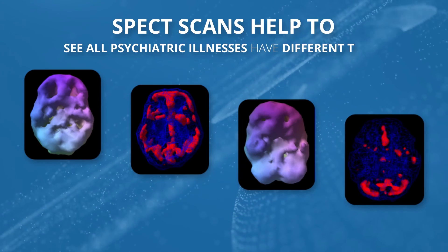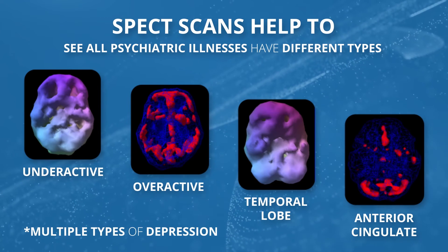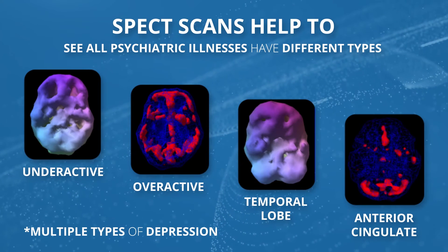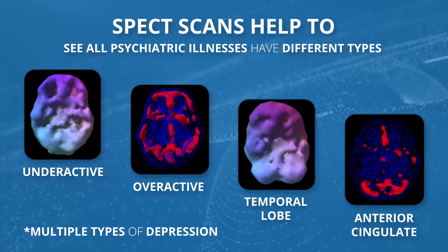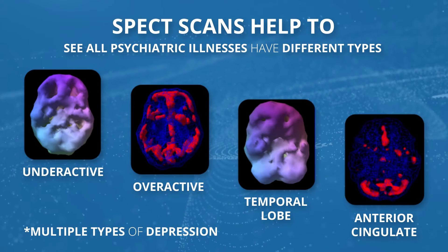One of the big lessons SPECT taught us is that all psychiatric illnesses — schizophrenia, bipolar disorder, depression, autism, ADHD, addictions — are not single or simple disorders. They all have multiple types. I've written books on ADHD, addiction, anxiety, depression, and obesity. You have to know what type their brain is because that helps to target treatment.